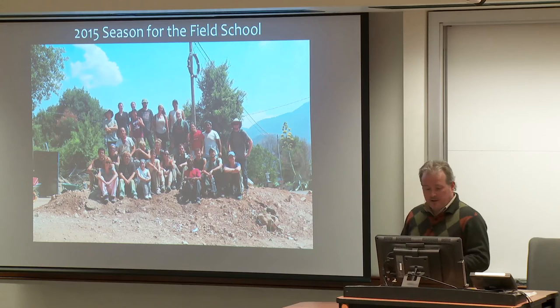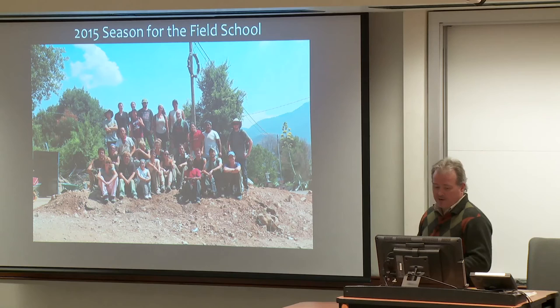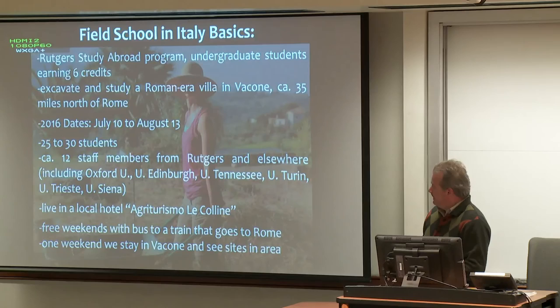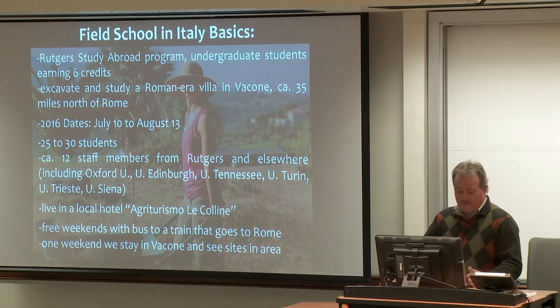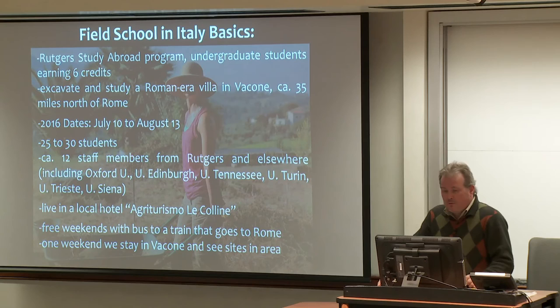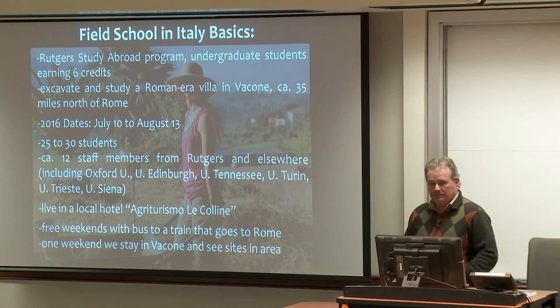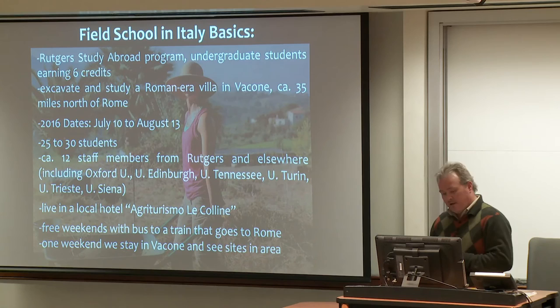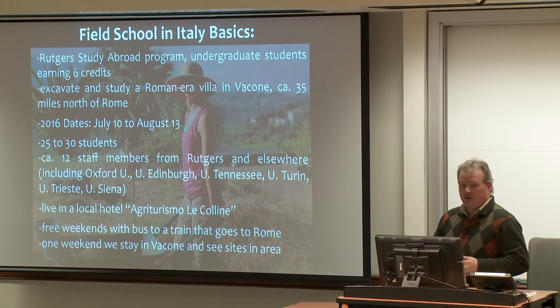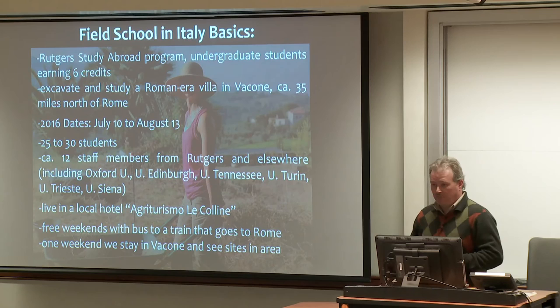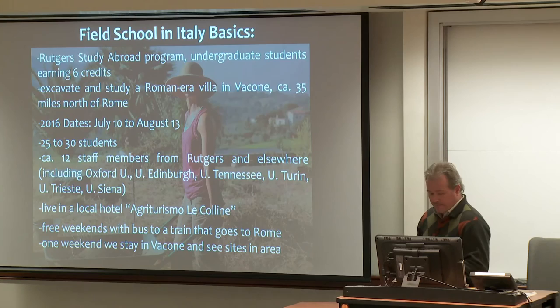Now for the recruiting part — inviting people to apply. We have a field school that we operate every season. It's a study abroad program where undergraduates earn six credits and get to excavate at the site I've just described, about 35 miles north of Rome. Dates for 2016 are July 10 to August 13. We usually take 25 to 30 students and have about 12 staff members from different places around the world — Australia, Britain, Italy, and the US. We live at a local hotel called Agriturismo Le Colline, and we work weekdays. On weekends we provide transportation to a train that takes you to Rome.